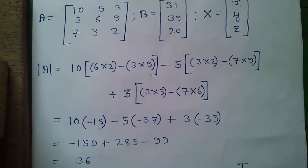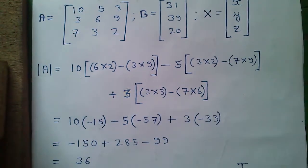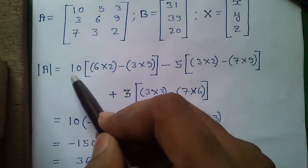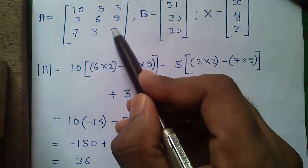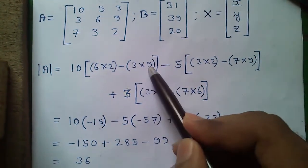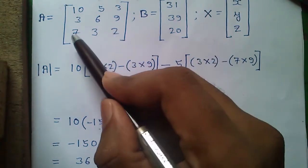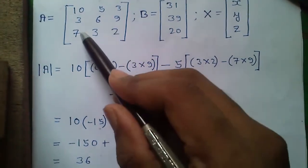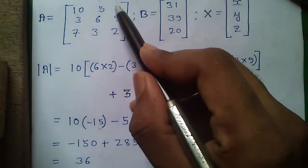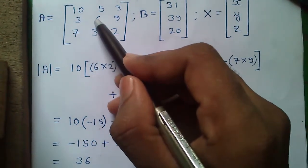Next we will find |A|, also called the determinant of A. It's very simple. First we take the number 10 into (6×2 − 3×9), then minus 5 into (3×2 − 7×9), plus 3 into (3×3 − 7×6). Remember, while finding the determinant we take the first number as plus, next as minus, next as plus — alternating plus and minus.